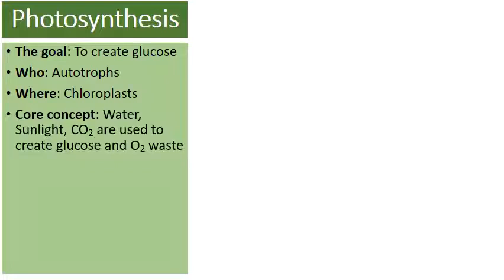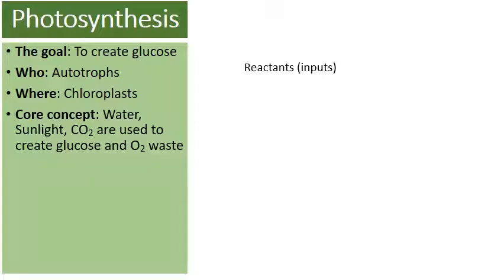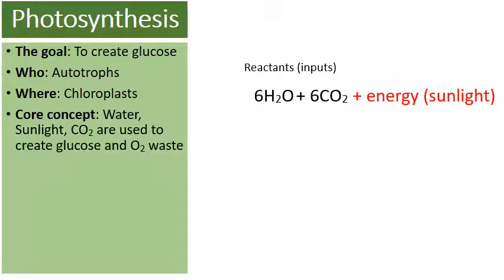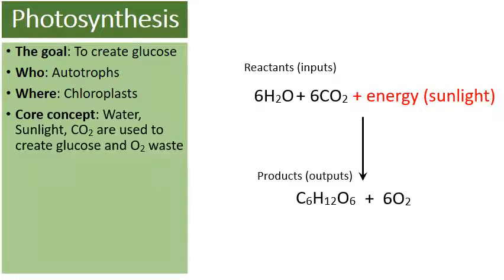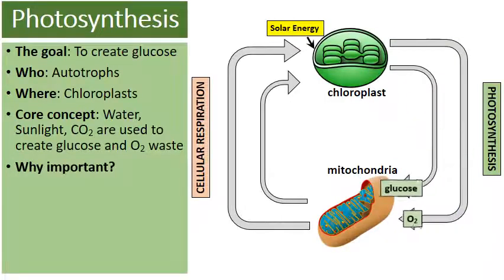The core concept of photosynthesis: water, sunlight, and carbon dioxide are used to produce glucose and some oxygen waste. The equation of photosynthesis has reactants of six molecules of water and six molecules of carbon dioxide, and energy in the form of sunlight will yield the products — a molecule of glucose (C6H12O6) and six molecules of oxygen.